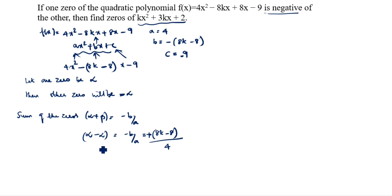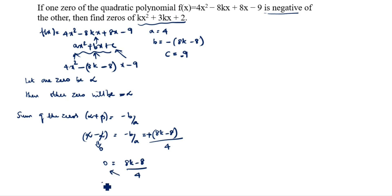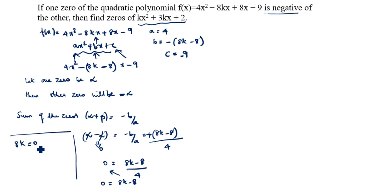Alpha minus alpha is 0. So 0 = (8k - 8) / 4. Cross-multiplying, 4 × 0 = 0, so 0 = 8k - 8. Therefore 8k = 8, and k = 8/8 = 1. So k value is 1.